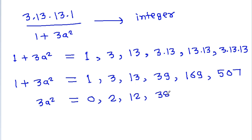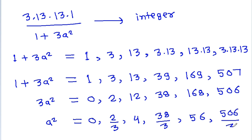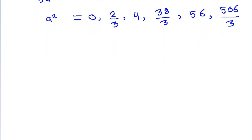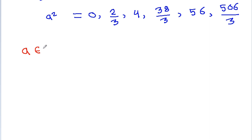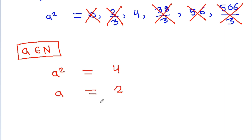So 3a squared will be equal to 0, 2, 12, 38, 168, or 506, and a squared will be equal to 0, 2 over 3, 4, 38 over 3, 56, or 506 over 3. Since a belongs to natural numbers, a squared cannot be 0, 2 over 3, 38 over 3, or 506 over 3. So a squared will be equal to 4, and a will be equal to 2.